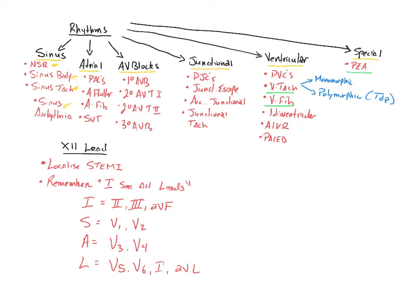Under atrial dysrhythmias, you should be able to identify premature atrial complexes. And remember, premature complexes are always going to be associated with an underlying rhythm. So you're going to have, say, sinus rhythm with premature atrial complexes.